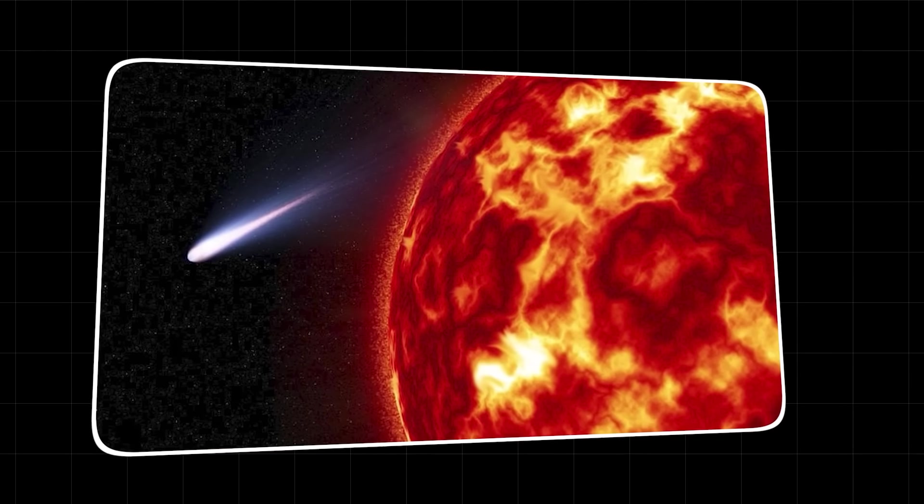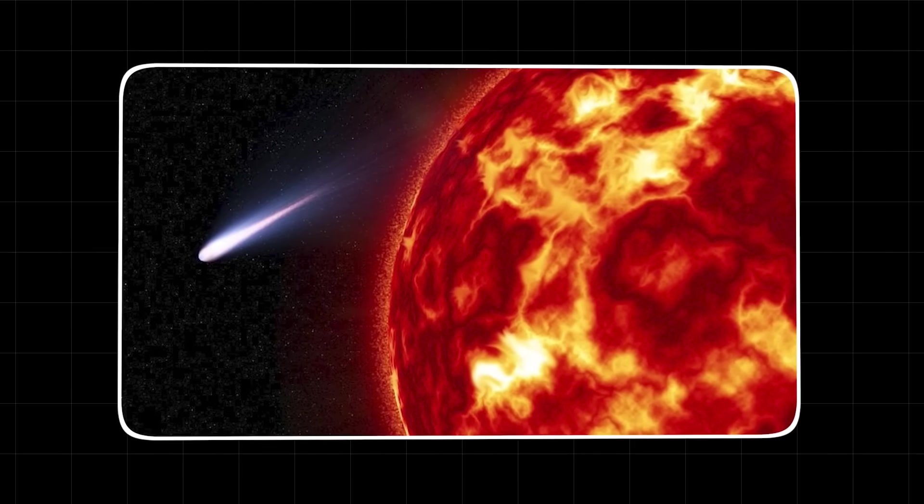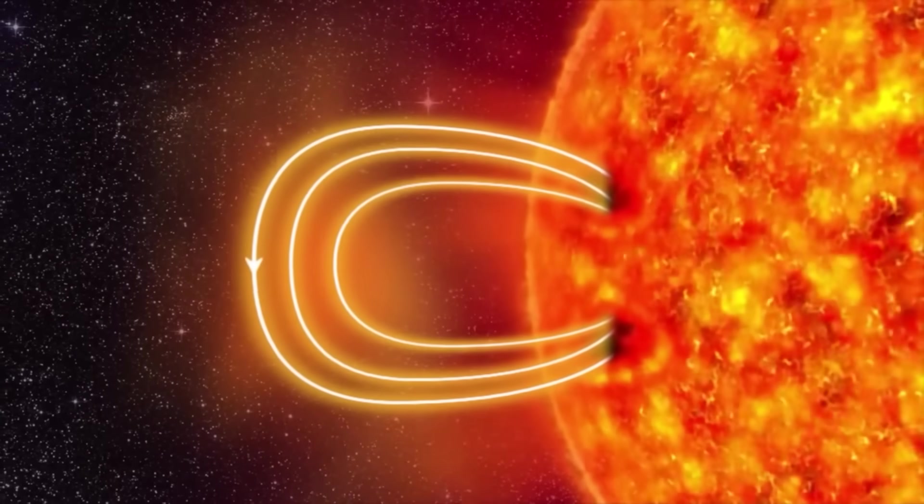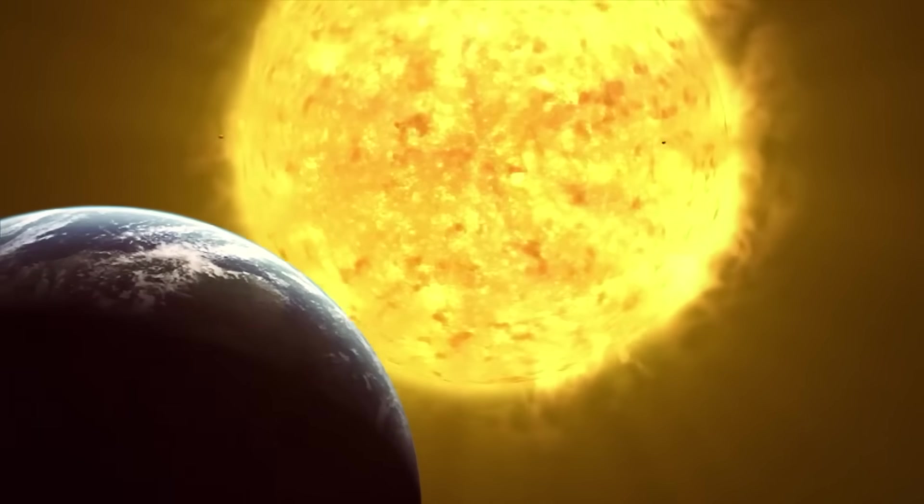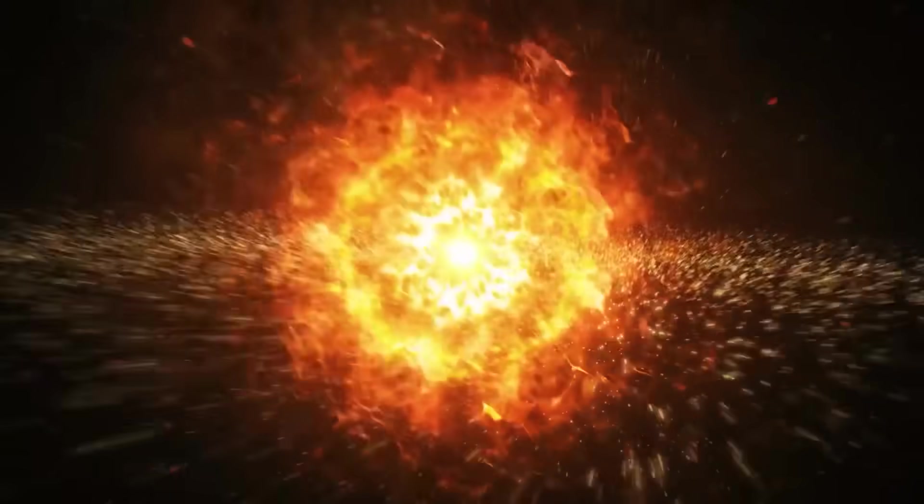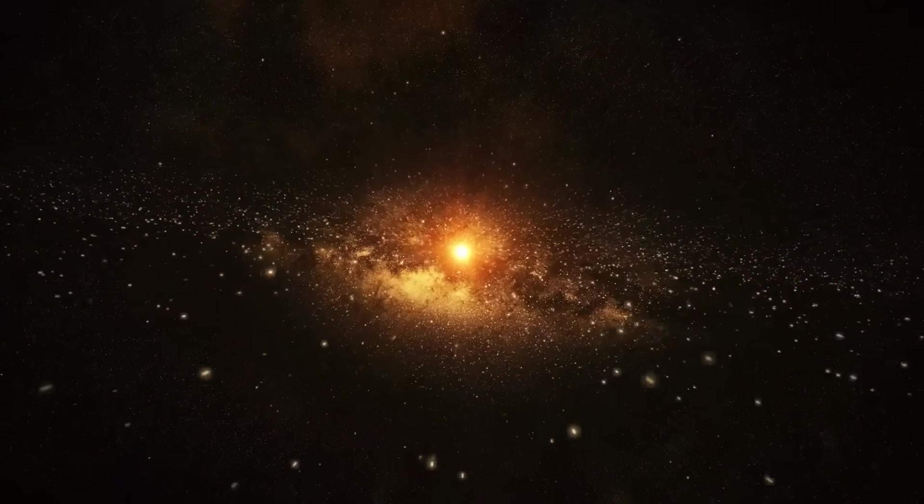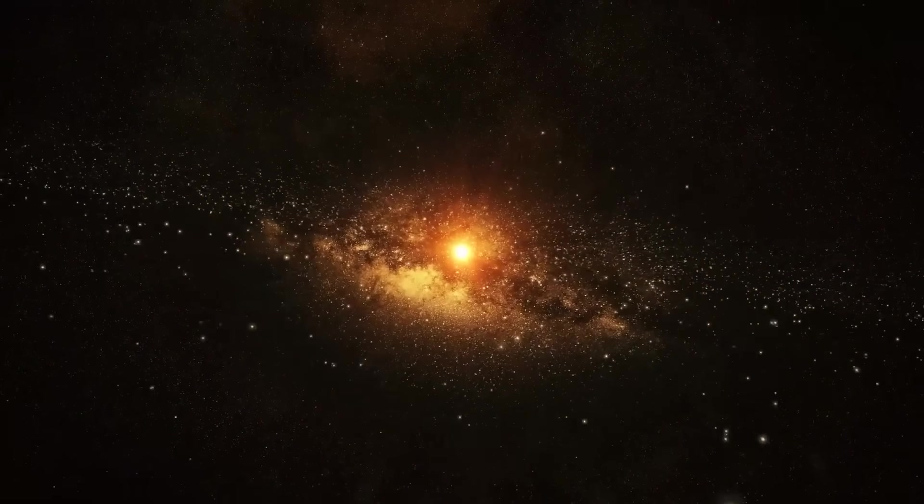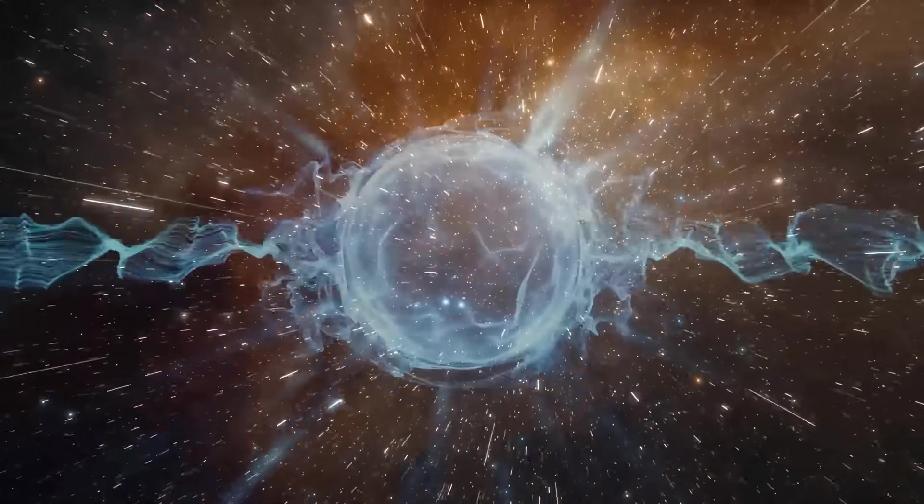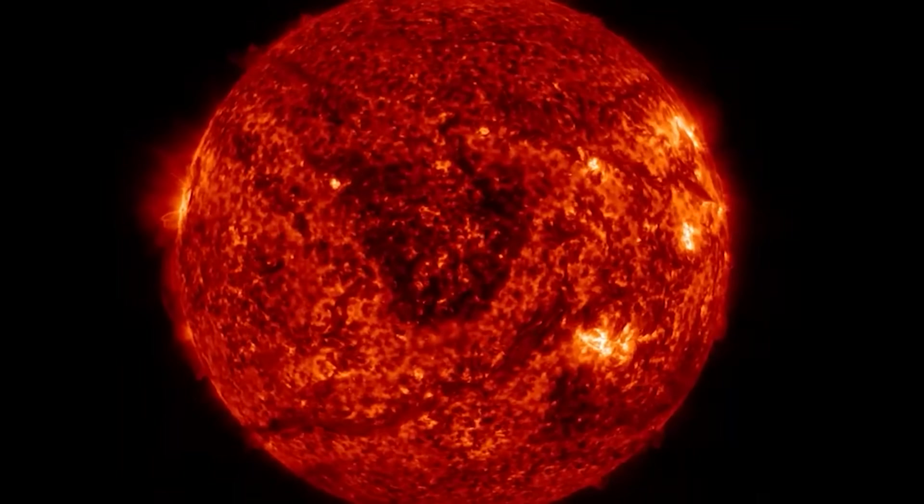One prevailing theory suggests that the comet's beam somehow disrupted the Sun's localized magnetic field with immense force. The Sun's magnetic field is incredibly complex, constantly shifting and twisting. If a focused energy burst could sever or dramatically reconfigure these field lines, it could create an immediate escape route for plasma, effectively punching an instant coronal hole.